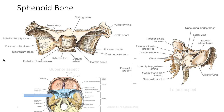The clivus is a slanted area of bone posterior and inferior to the dorsum sellae, and is continuous with the basilar area of the occipital bone, which supports the pons of the brain. The optic groove extends across the anterior portion of the tuberculum sellae and ends on each side of the optic canal. The optic canal is an opening to the apex of the orbit for transmission of the optic nerve and ophthalmic artery, and the actual opening is termed the optic foramen.